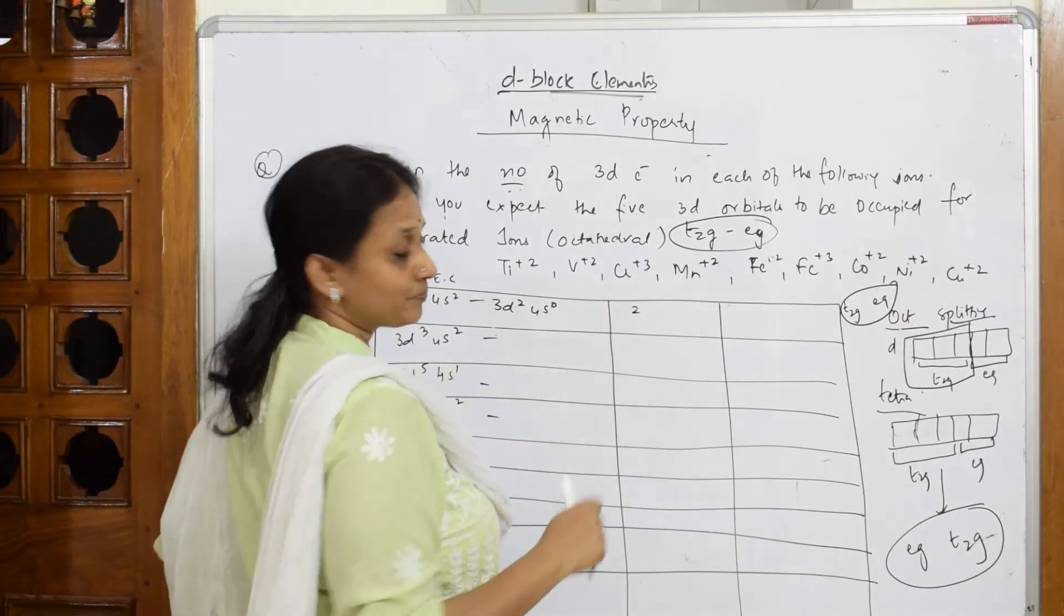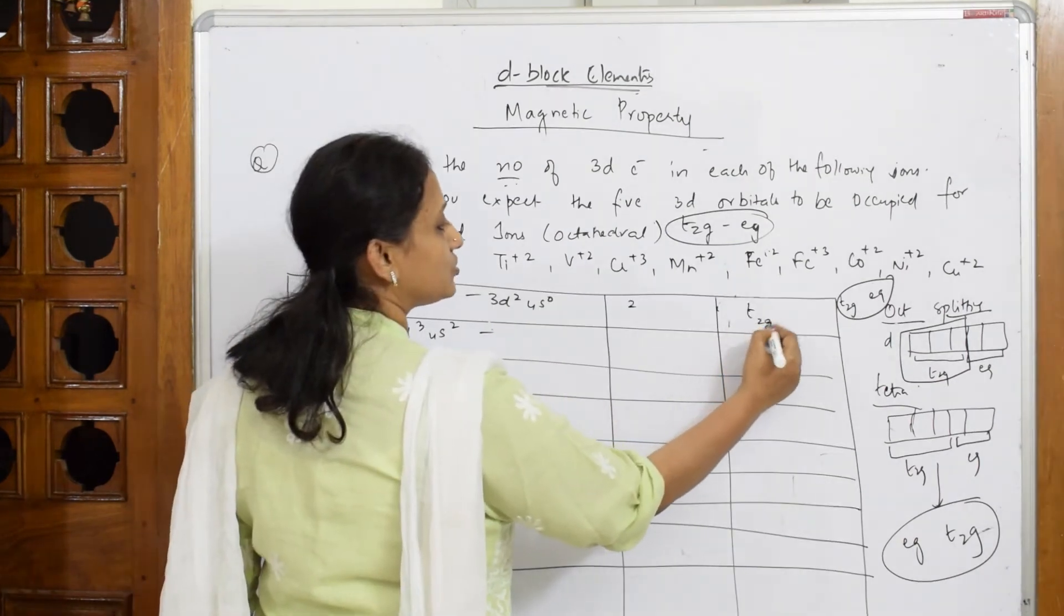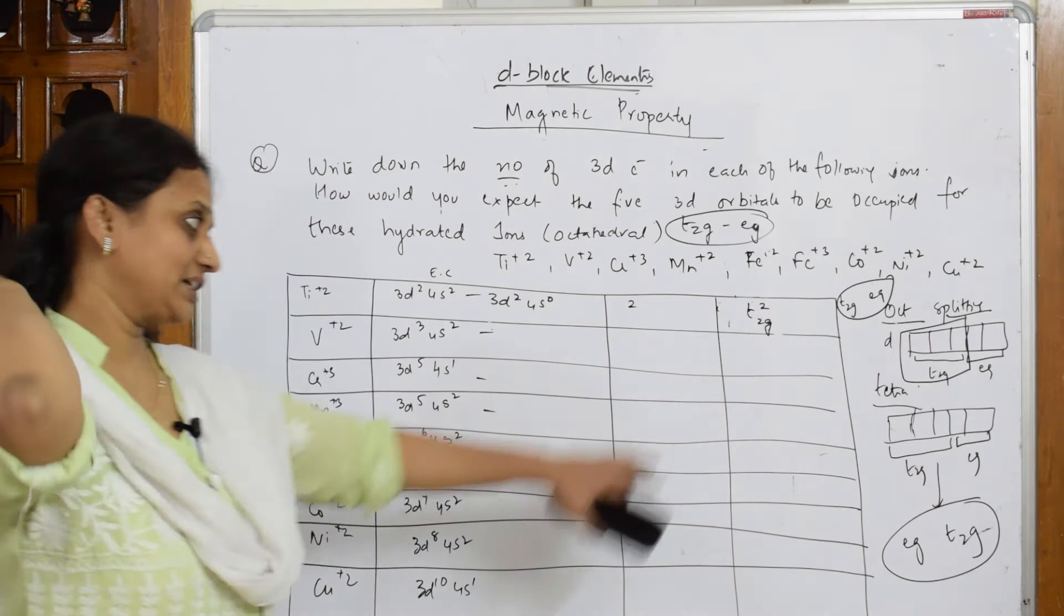Now, how does this go and fill? First, it has to fill T2G, no? Right? How will you write? You're going to write T2G².